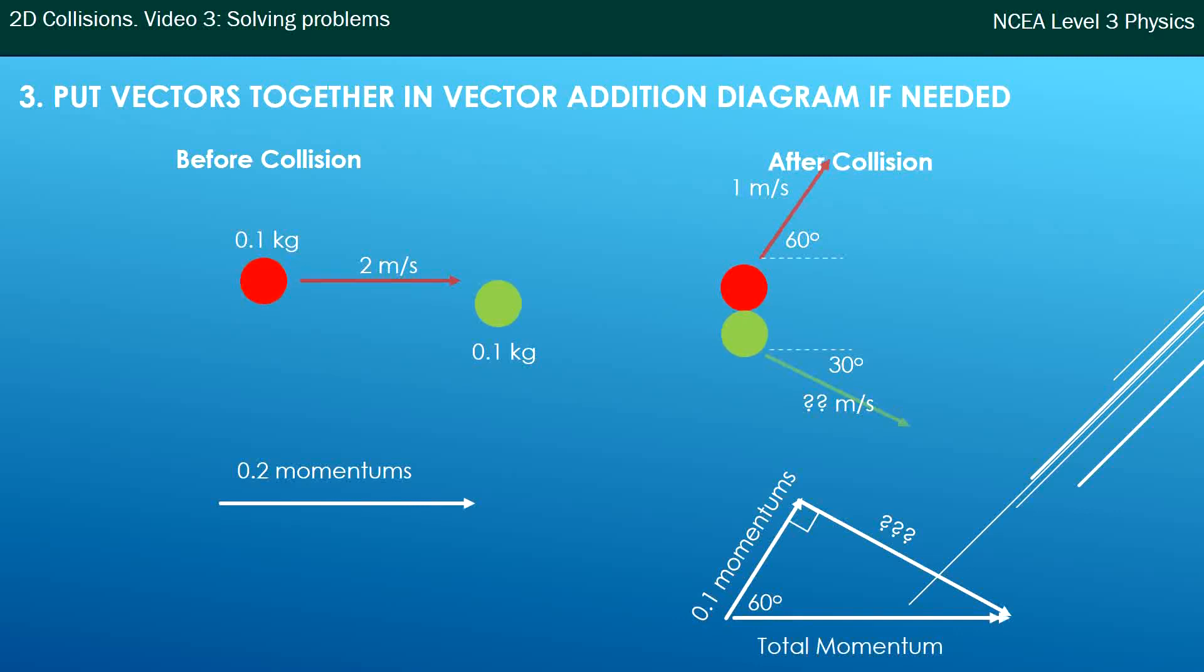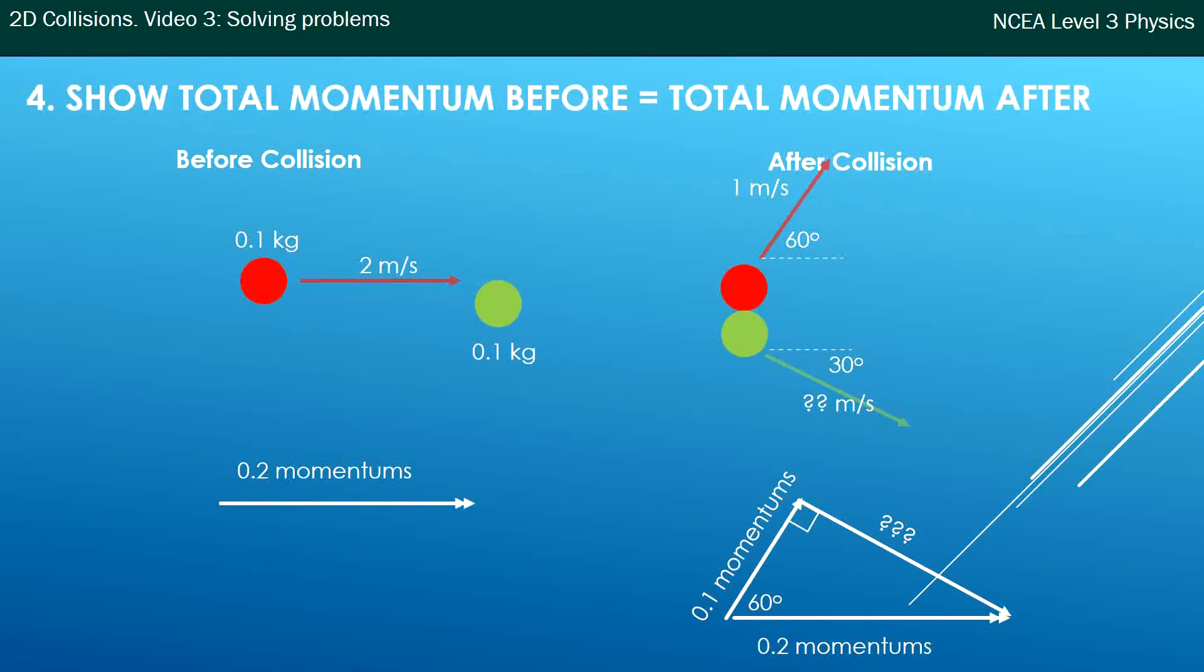So the total momentum is from the start to the finish. How did I know it went straight across? I know it went straight across because the total momentum before equals the total momentum afterwards, and before my before diagram I had 0.2.